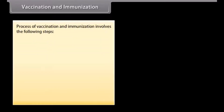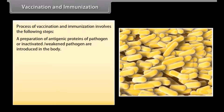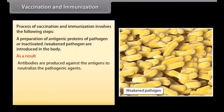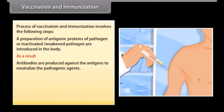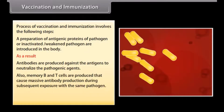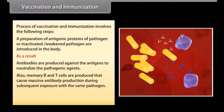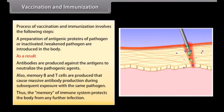The process of vaccination and immunization involves the following steps: A preparation of antigenic proteins of a pathogen, or inactivated weakened pathogen, is introduced into the body. As a result, antibodies are produced against the antigens to neutralize the pathogenic agents. Also, memory B and T cells are produced that cause massive antibody production during subsequent exposure with the same pathogen. Thus, the memory of the immune system protects the body from any further infection.